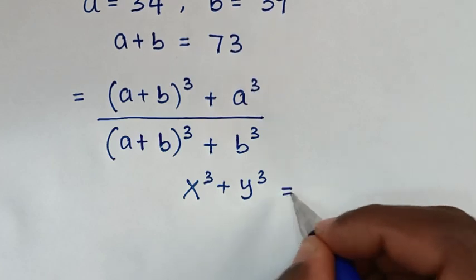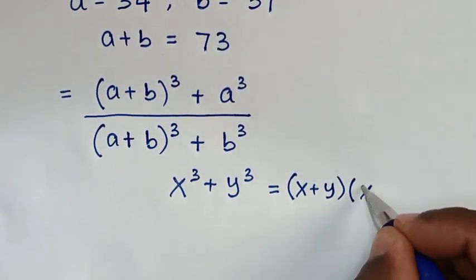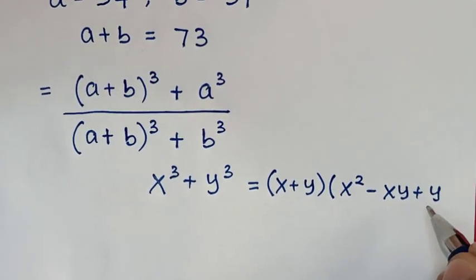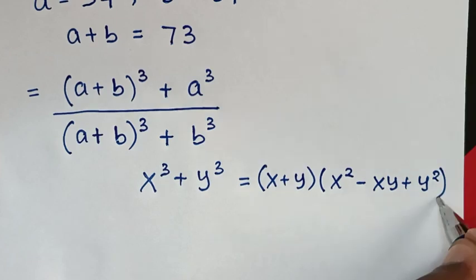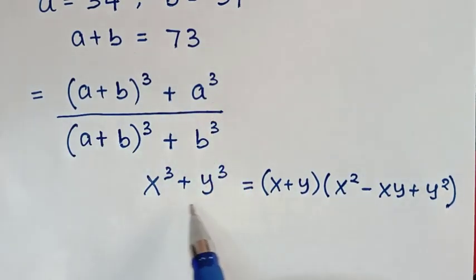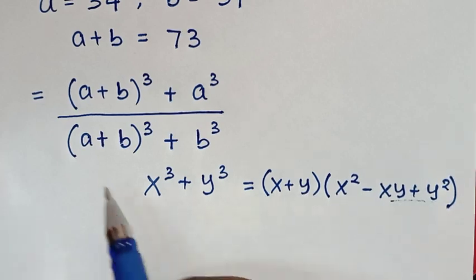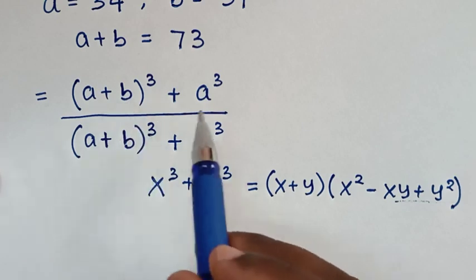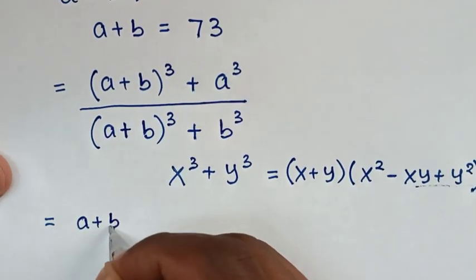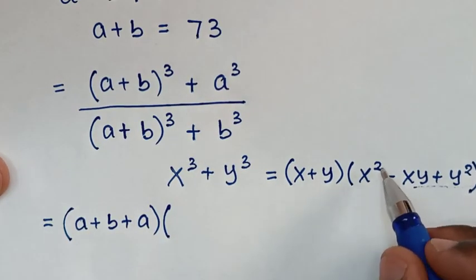Now, in the numerator and in the denominator, it is in the form of X power 3 plus Y power 3, which is equal to X plus Y bracket, bracket X square minus XY plus Y square bracket. Then, from here in the numerator, we'll apply this form. X plus Y will be A plus B plus A.